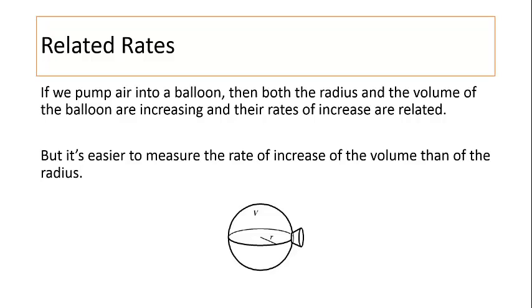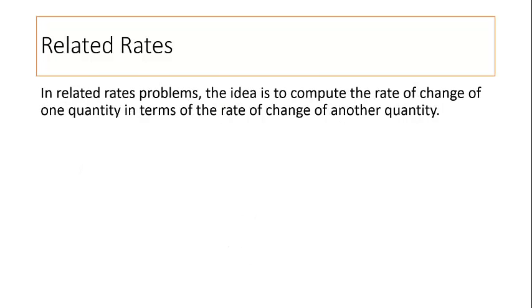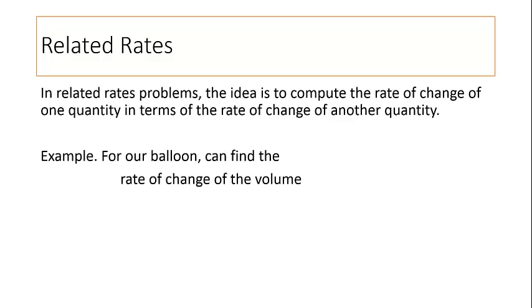It's easier to measure the rate of increase of the volume than of the radius. For example, we could put the balloon into water, and as we pump air into the balloon, watch the water level rise. In related rates problems, the idea is to compute the rate of change of one quantity in terms of the rate of change of another quantity. For example, for our balloon, we can find the rate of change of the volume in terms of the rate of change of the radius.